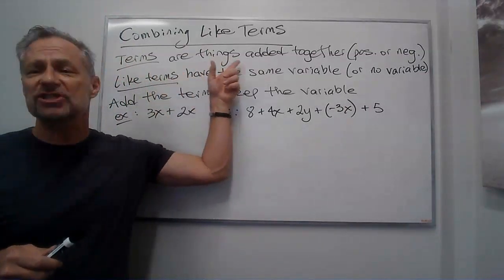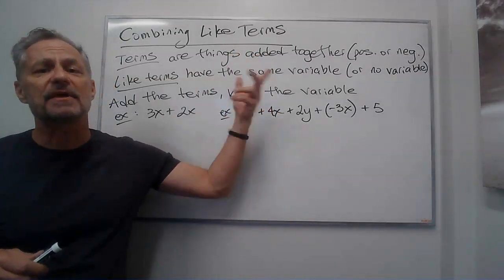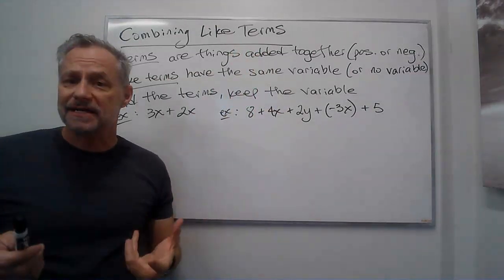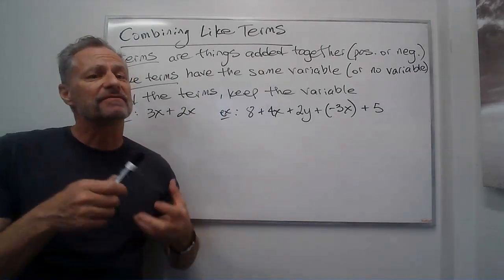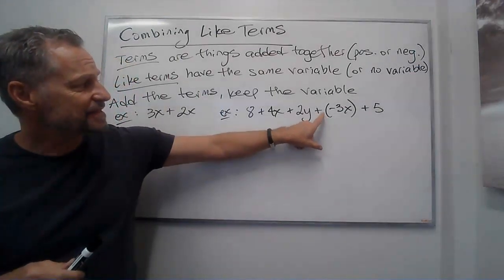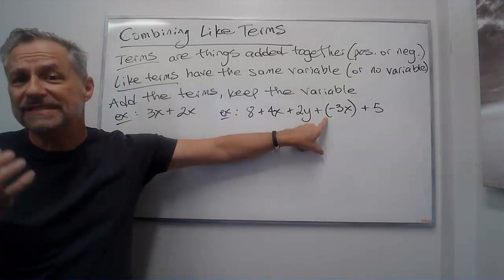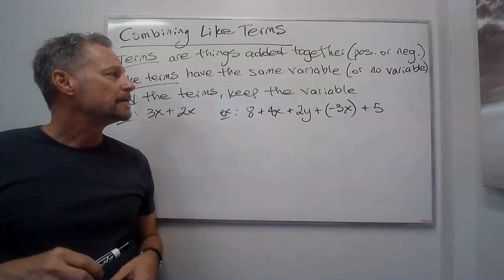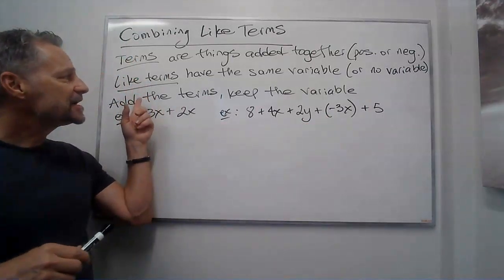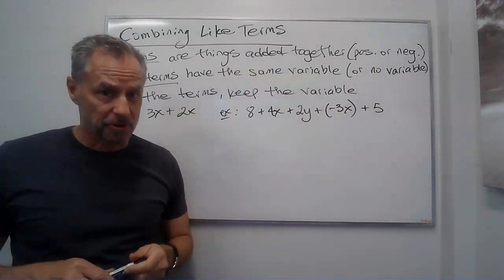Well first of all, terms are just things added together. They may be positive, they may be negative, but they're added together. We'll see later if there's a minus in front of it, we can think of it as in this example adding a negative, so it's still adding things together. Like terms have the same variable or no variable at all.